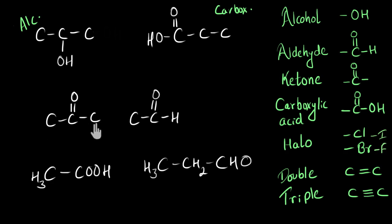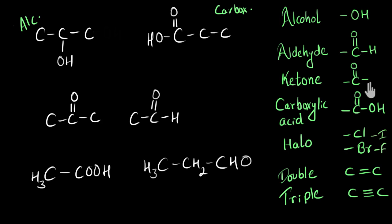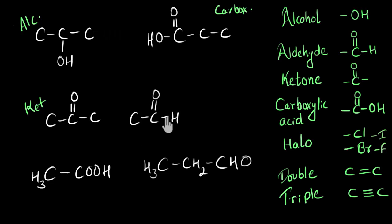Now let's look at the next one. Here there's a carbon chain, and this carbon has double bond O attached to it — and on both sides, it's attached to a carbon atom. You can see that in the ketone group: C double bond O with both sides free to attach to carbon atoms. Not aldehyde — because aldehyde has one hydrogen atom on one side. So this is going to be ketone. Similarly, in the next one, this carbon atom is double bonded with oxygen and on one side there is a hydrogen — only one side is attached to a carbon. So this is going to be an aldehyde, not a ketone.